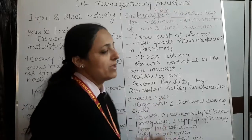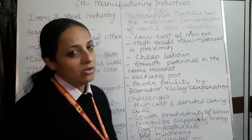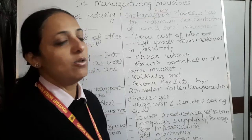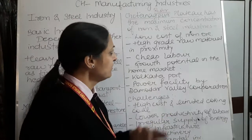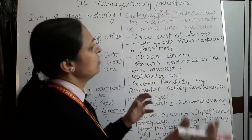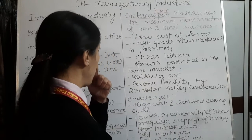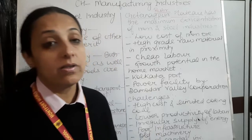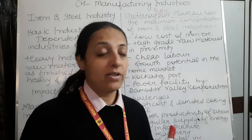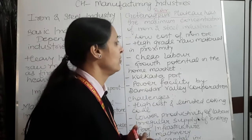The concentration of plants in Chotanagpur is due to the proximity of raw material and the low cost of iron ore. Coking coal is available nearby, as well as high-grade raw materials such as magnetite iron ore and hematite iron ore, all available in close proximity.